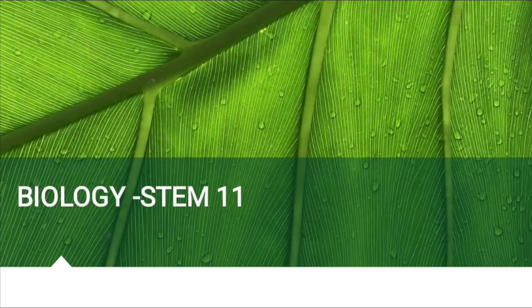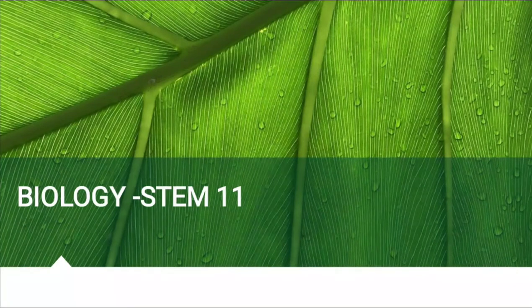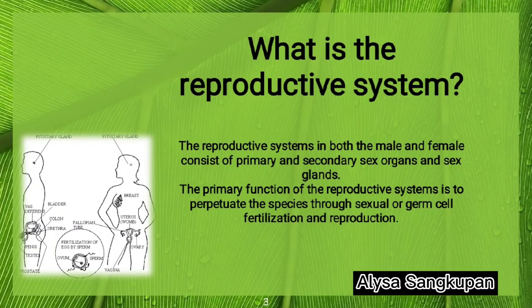Good day everyone, I am Eliza Sankupan. So for today's video, we are going to talk about the reproductive system. If you want to know more about the reproductive system, just focus on this video. The reproductive system in both the male and female consists of primary and secondary sex organs and sex glands. The primary function of the reproductive system is to perpetuate the species through sexual or germ cell fertilization and reproduction.